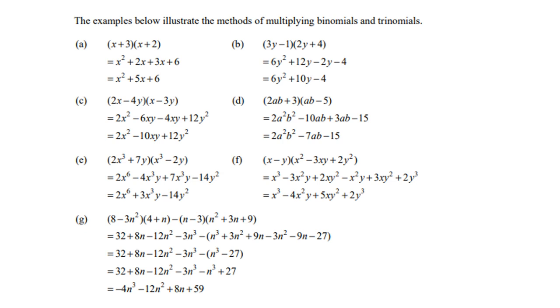Collect your like terms. And then get your final answer, which is negative 4N to the power 3 minus 12N squared plus 8N plus 59.